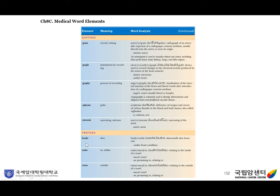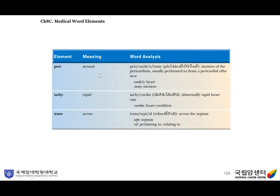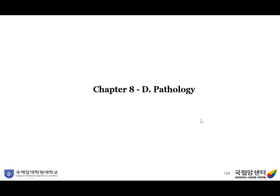For the prefixes: Brady means slow, so bradycardia means an abnormally slow heart rate. Endo means in, so endovascular means relating to the inside of a vessel. Extra means outside; extravascular means relating to the outside of a vessel. Peri means around. Tachy means rapid; tachycardia means an abnormally rapid heart rate. Trans means across; transeptal means across the septum.